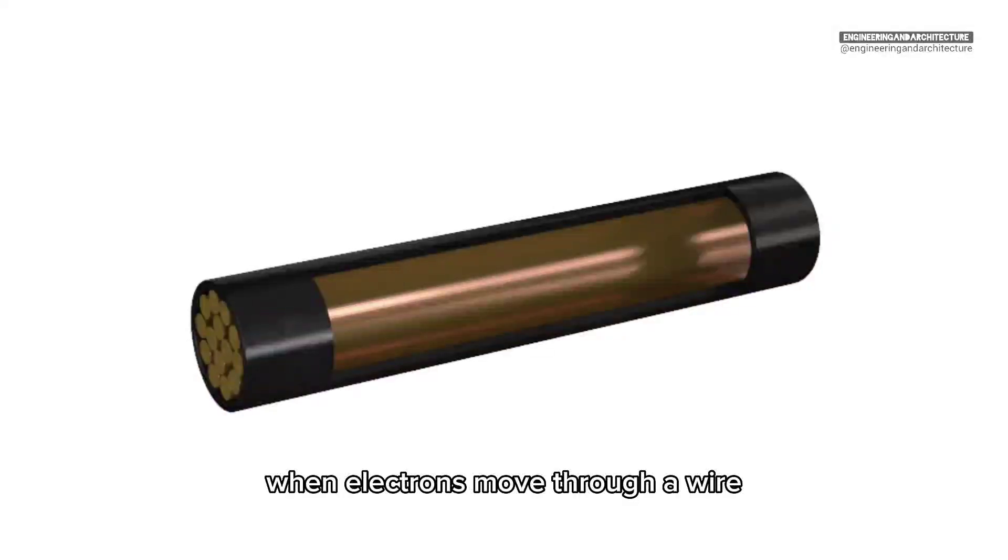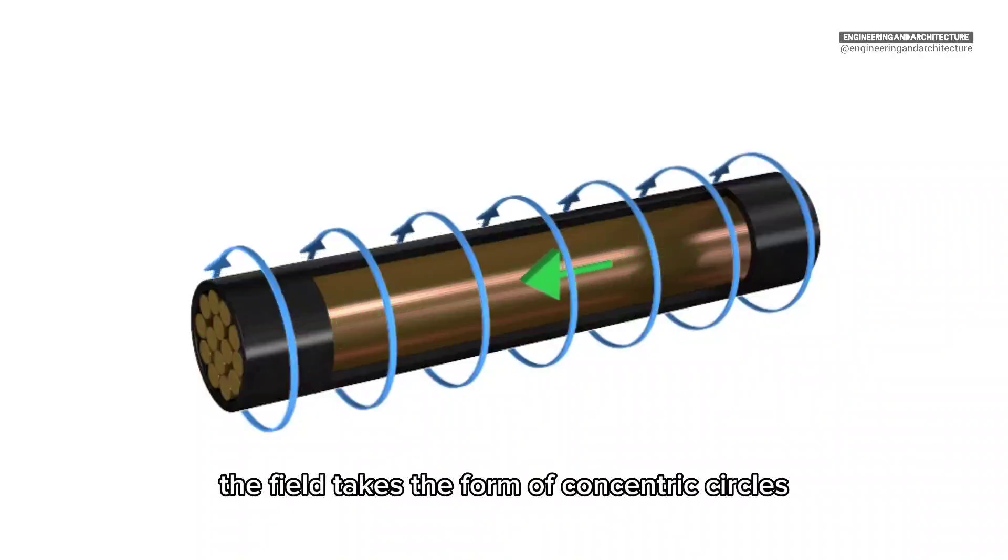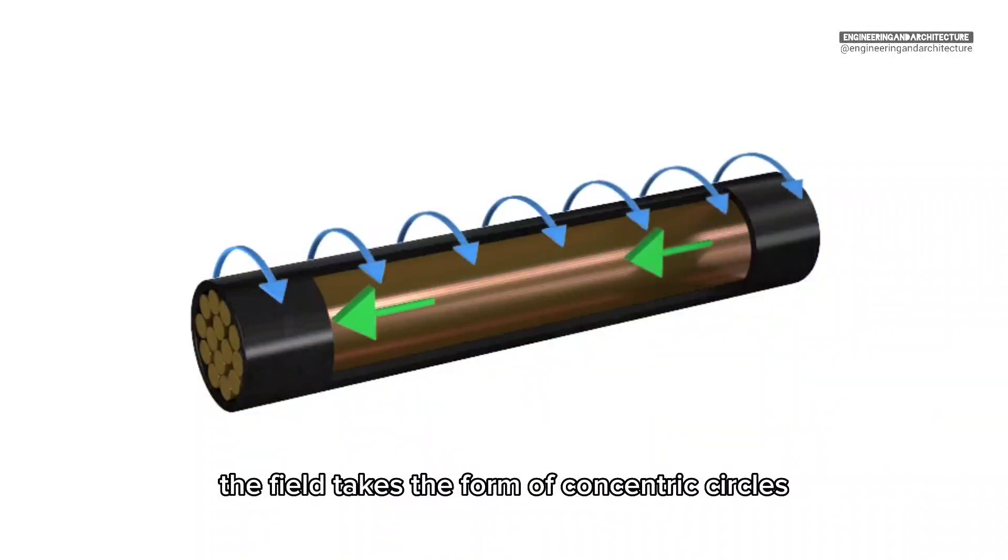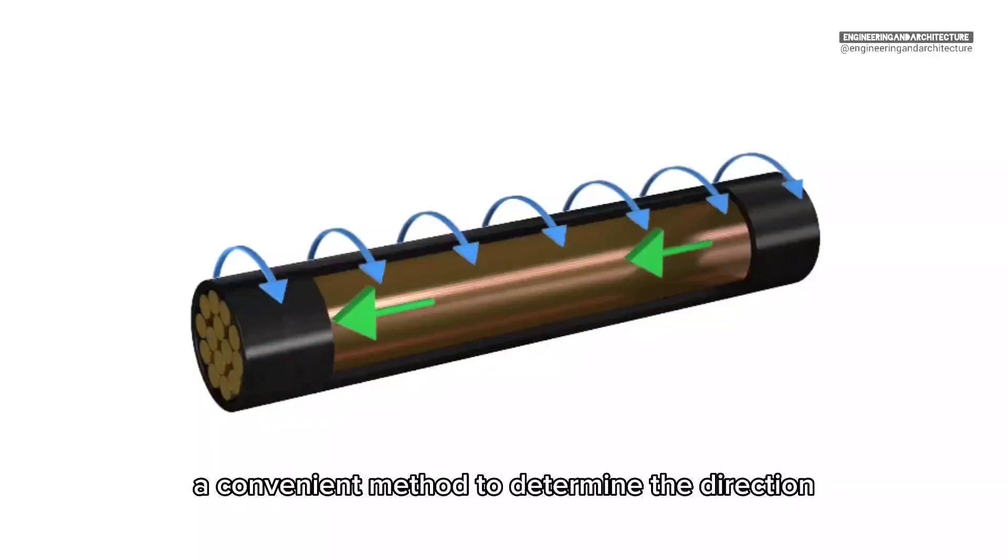When electrons move through a wire, a magnetic field is created at right angles to the current flow. If the conductor in which the current flows is a straight wire, the field takes the form of concentric circles or rings of magnetic force around the wire.